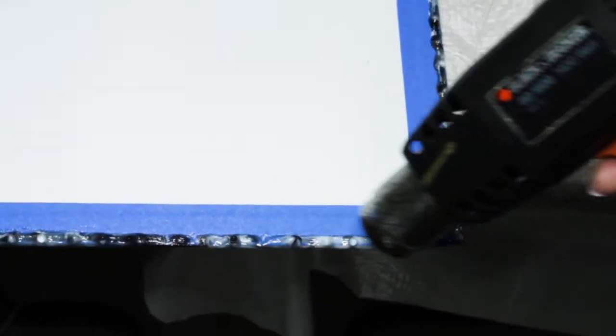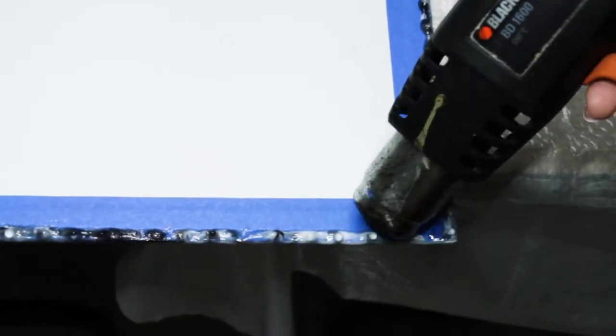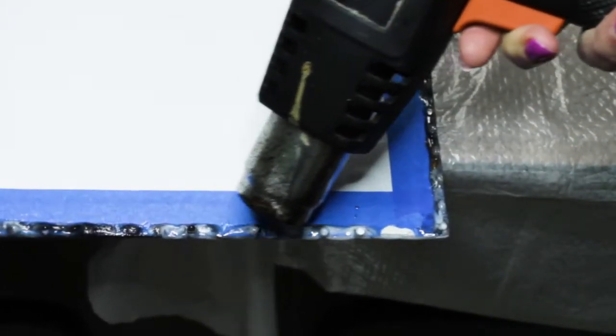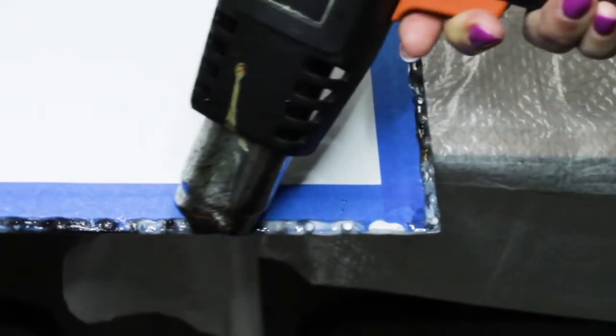The aim is to warm the resin just enough to soften it, so don't get the heat gun too close to the resin and keep it moving at all times, or you'll burn it. I've found it's best to work in small sections at a time.